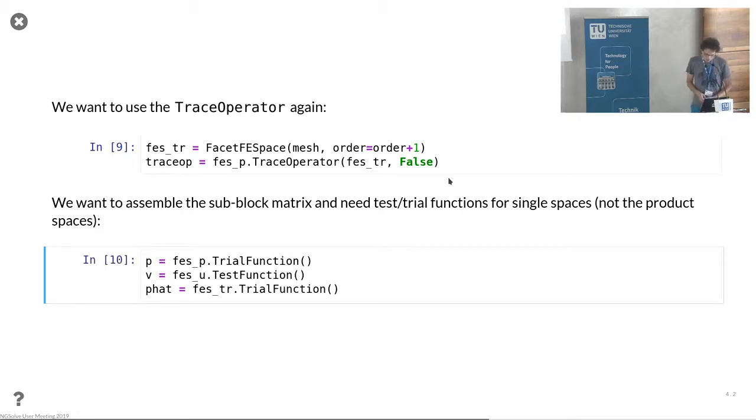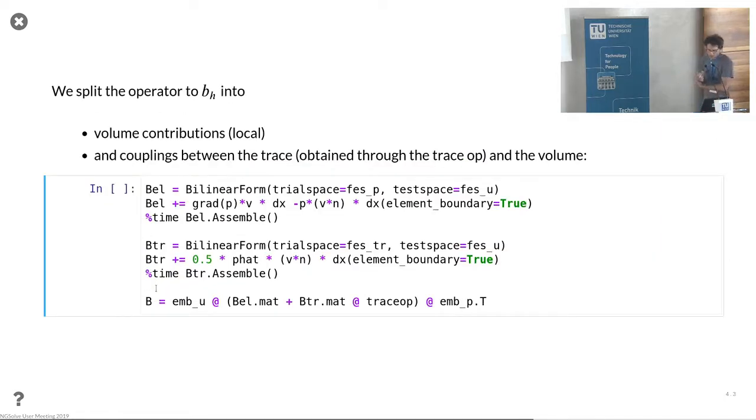We define the trace operation that we saw before. The splitting is the same as before: one part which just involves element local quantities and one part which involves the coupling between the traces and the interior. P hat is the sum of the two neighboring traces.